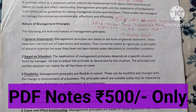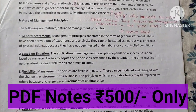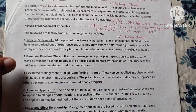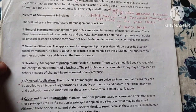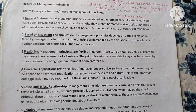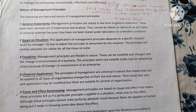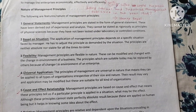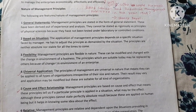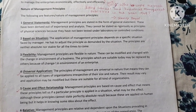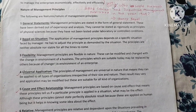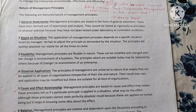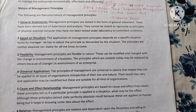The nature, features, and characteristics of management principles: Number one — management principles are stated in the form of general statements. These have been derived out of experience and analysis. They cannot be stated as precisely as principles of physical sciences because they have not been tested under laboratory or controlled conditions.